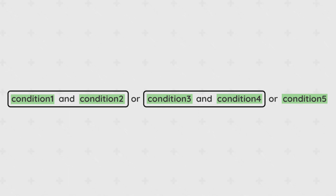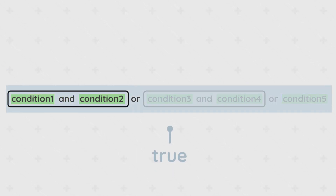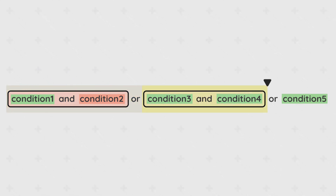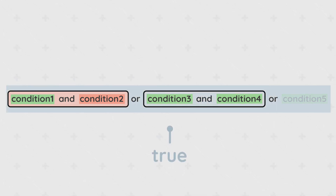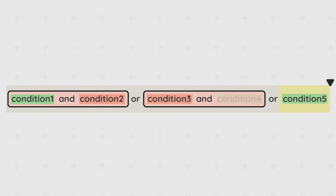When using both AND and OR statements together, condition expressions are evaluated from left to right, starting with the first two combined conditions. If conditions one and two evaluate to true, the whole expression is true, skipping remaining conditions. If false, it moves on to the next condition. If conditions three and four are true, the whole expression is true. If false, it continues. Finally, if condition five is true, the whole expression is true; if false, the whole expression is false.